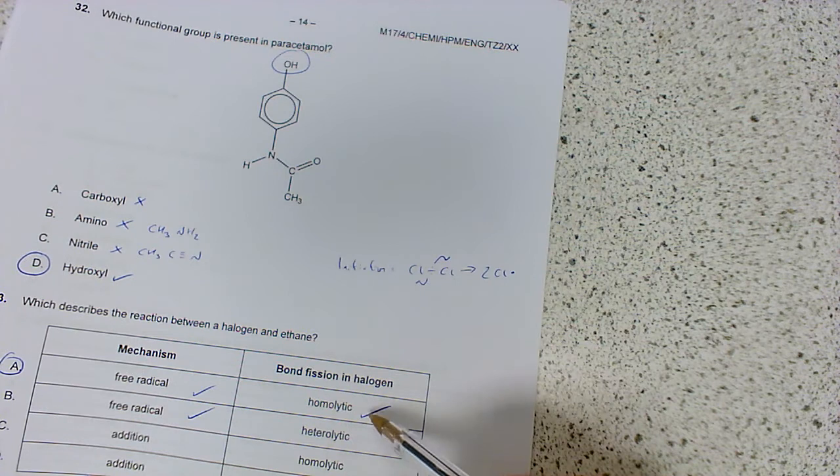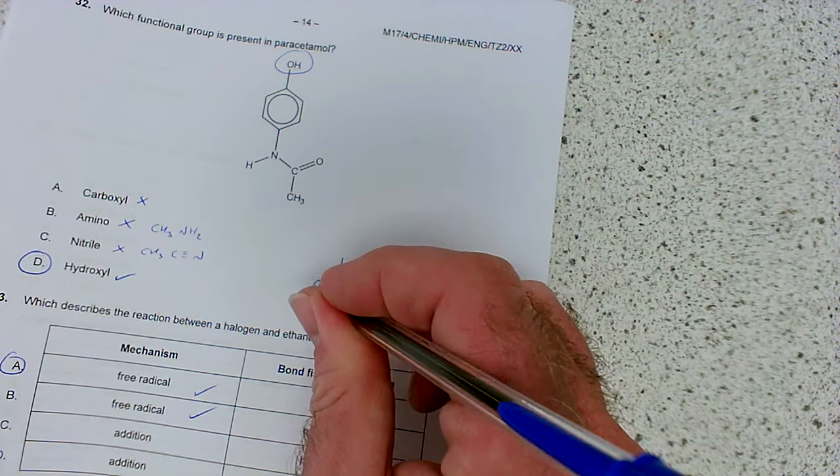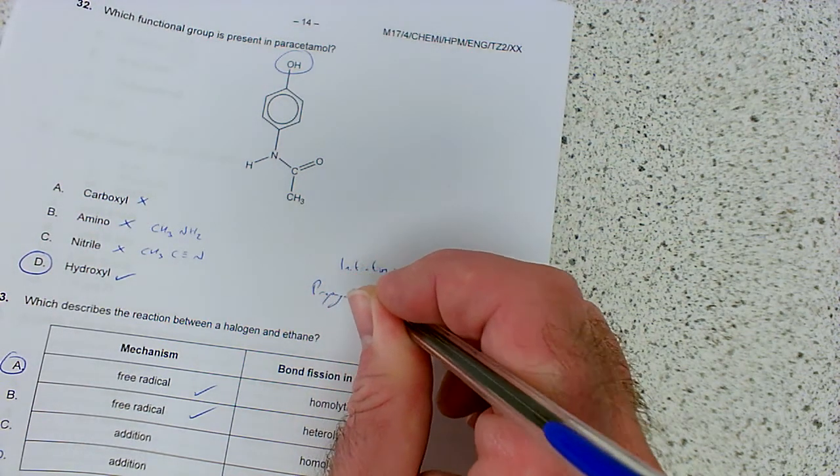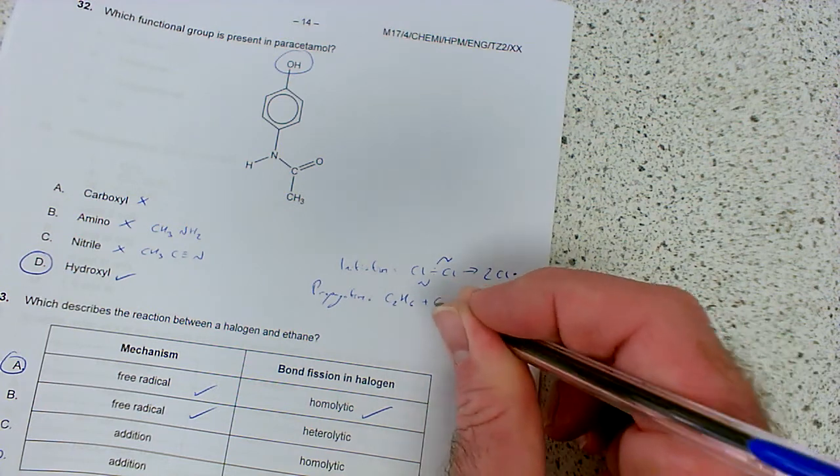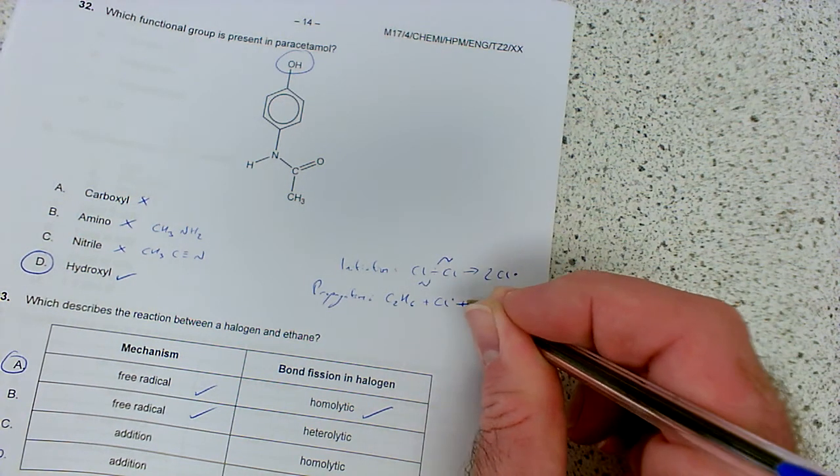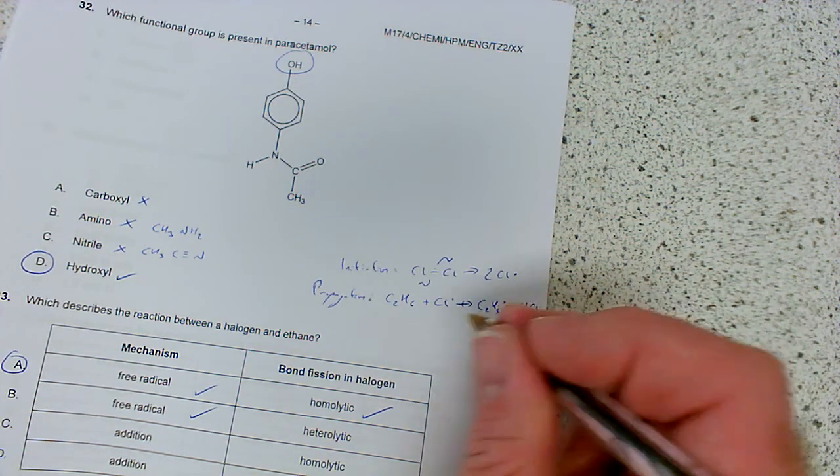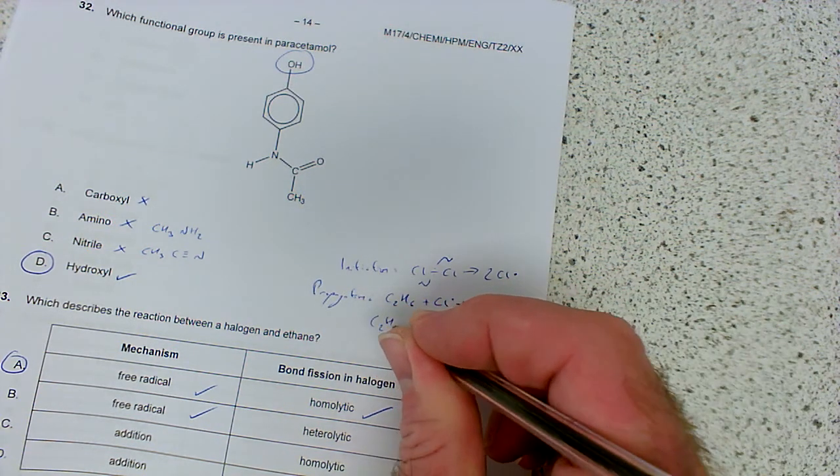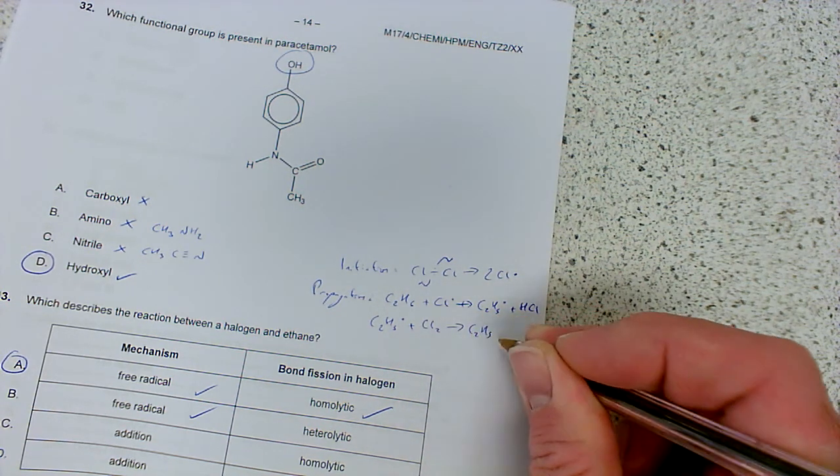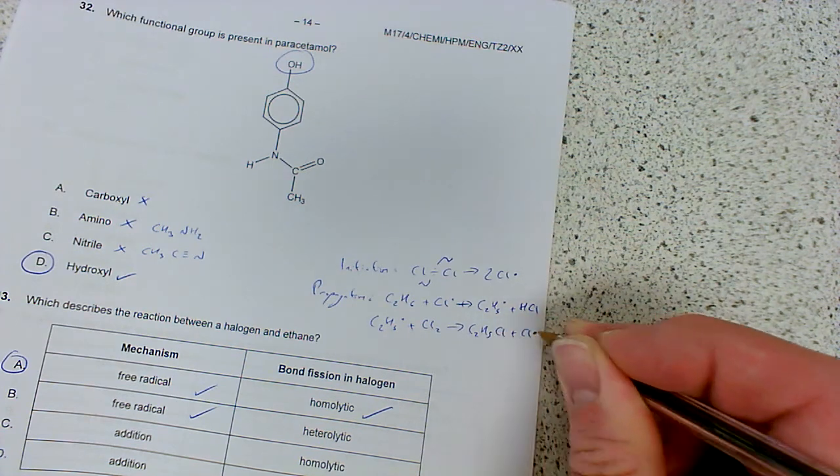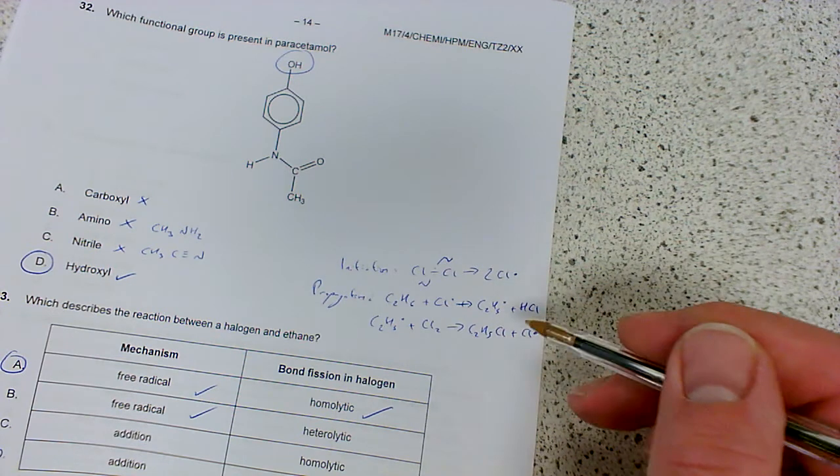One electron goes each way giving two chlorine radicals. For propagation, ethane C2H6 reacts with a chlorine radical which steals a hydrogen, giving C2H5 radical plus HCl. Second step, the C2H5 radical reacts with more Cl2, steals a chlorine to give C2H5Cl plus another chlorine radical.